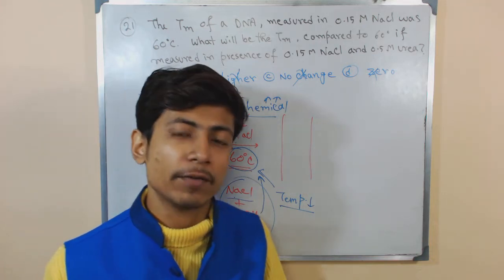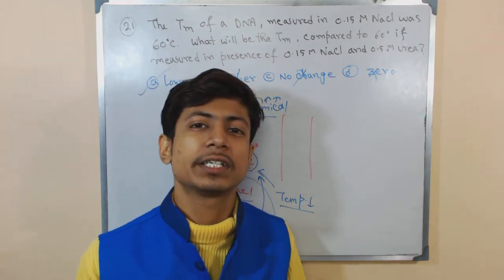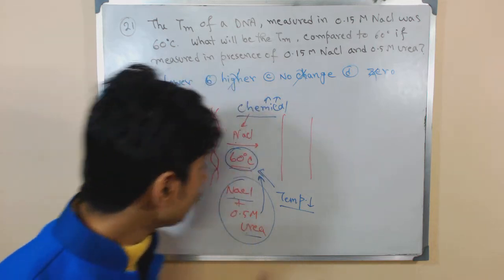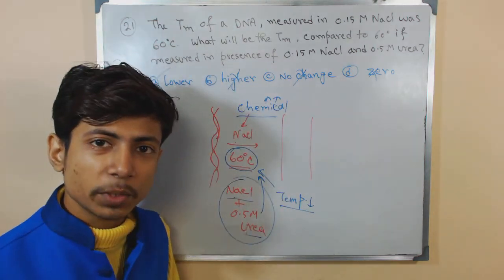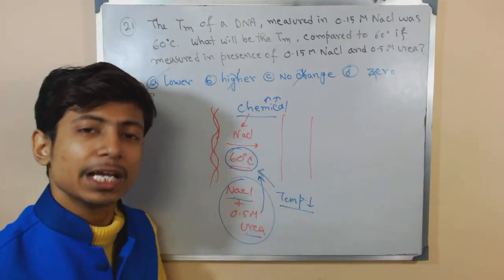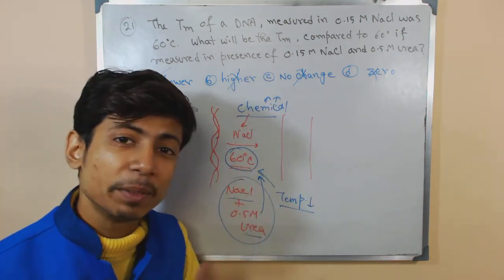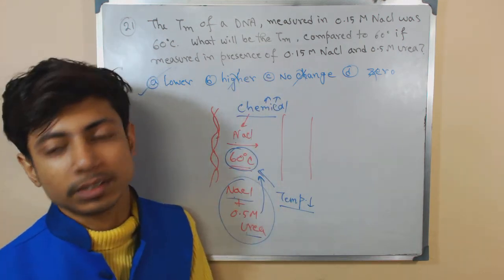We will not require 60 degrees. We only require lower than 60 degrees to melt. But if we remove NaCl from the situation and only depend on the temperature, then the melting temperature will further increase. Then the Tm will be more. That is the concept.